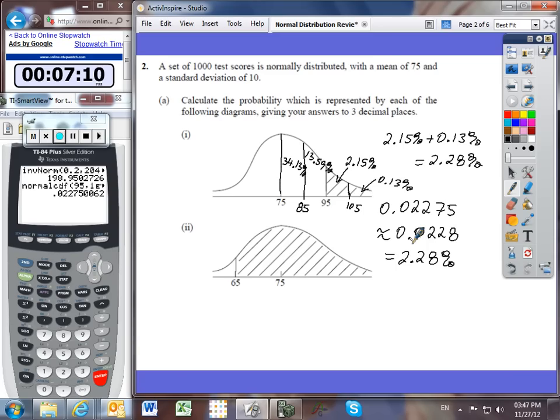Alright, the second problem. We've now got our 1 standard deviation below the mean is 65. And so there's the mean at 75. And then we've got our 1 standard deviation above. I know that this region is 34.13%, and this is also 34.13%. This one is 13.59%, this one is 2.15%. And there's another little one that comes all the way out here, a really tiny one, and that one is 0.13%.